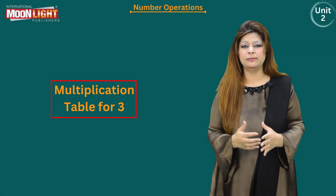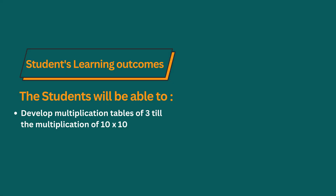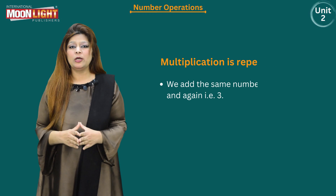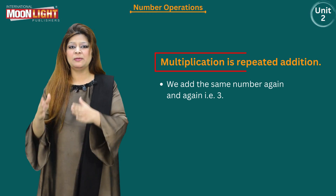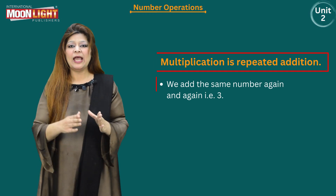Today's topic is the multiplication table for the number three. By the end of this lesson you will be able to develop the multiplication table of three up to 10 into 10, meaning up to the number 10. As you already know, multiplication is repeated addition — we add the same number again and again.